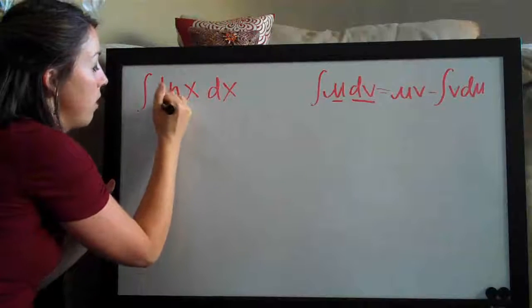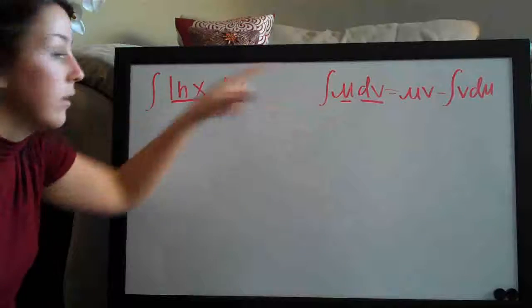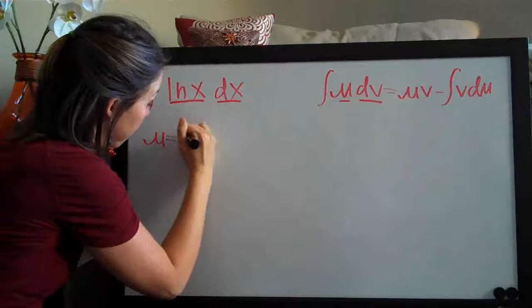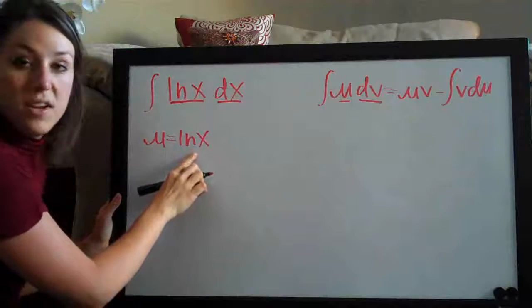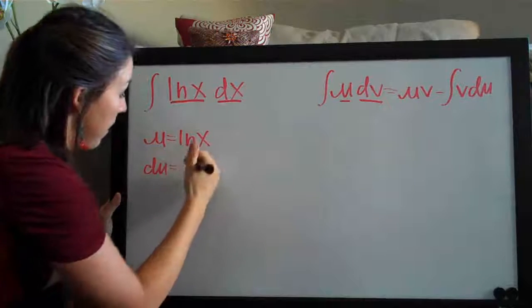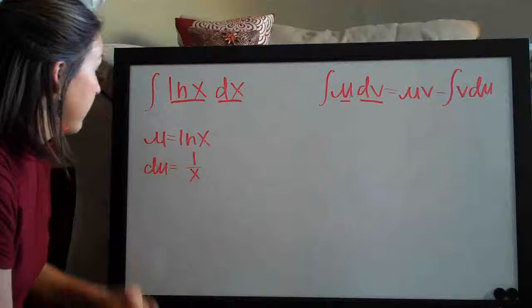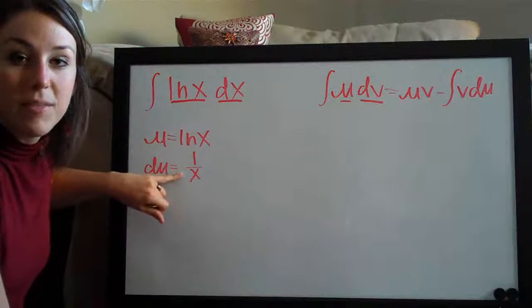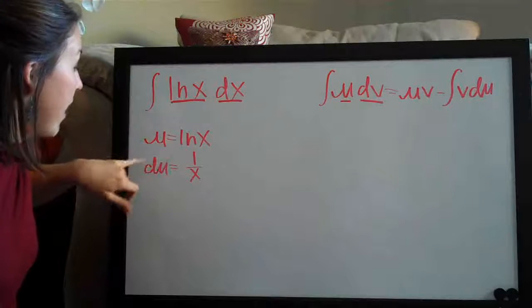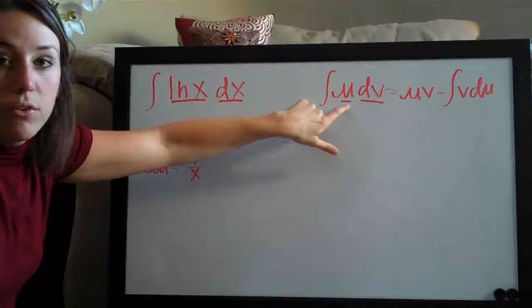Our two components over here are ln and dx. We're going to assign u to ln because when you take the derivative of u, which we call du, we get one over x. The derivative of ln of x is one over x, and one over x is something that's much simpler for us to deal with than the natural log of x. So that's why ln of x is a good candidate to be our u.